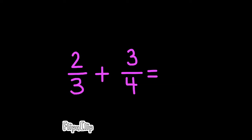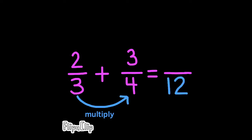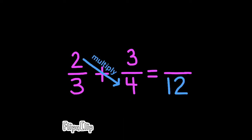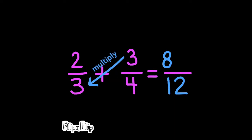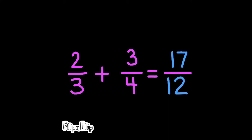Let's do another one. Remember the first step: multiply the two denominators. The second step: multiply the left numerator by the right denominator. The third step: multiply the right numerator by the left denominator. In doing these steps, two-thirds plus three-fourths became eight plus nine over twelve. Add eight plus nine to get seventeen, and the answer is seventeen-twelfths.